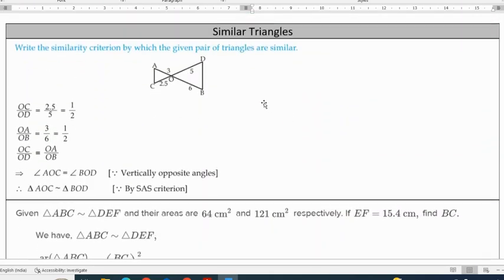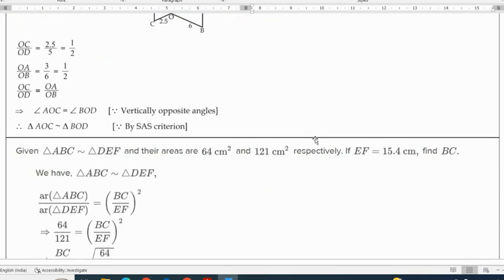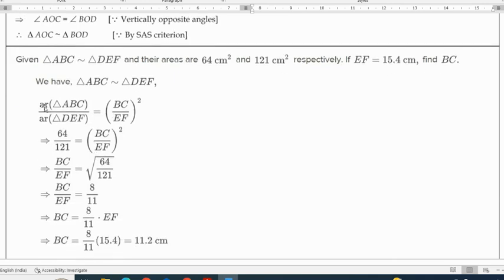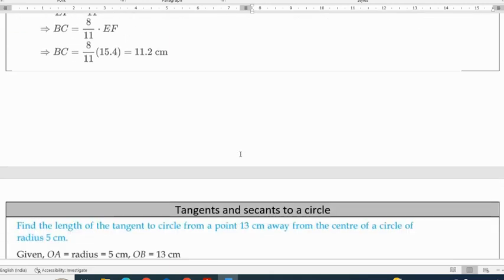Similar triangles: based on which criteria they are similar. Area of two triangles with corresponding sides given, find BC. Use similar triangle theorem: area of triangle ABC by area of triangle DEF equals BC by EF which is 11.2.